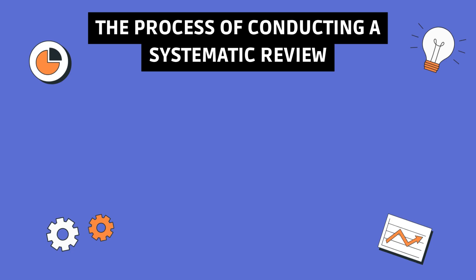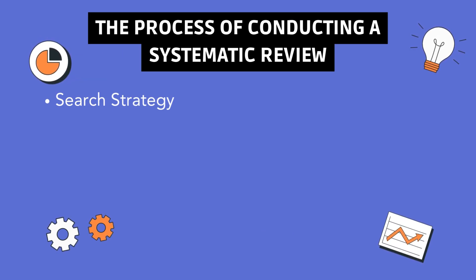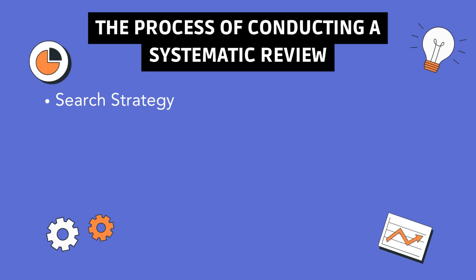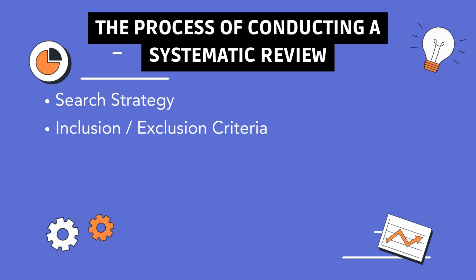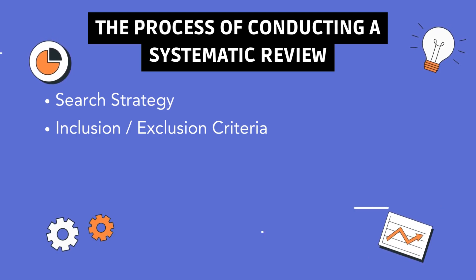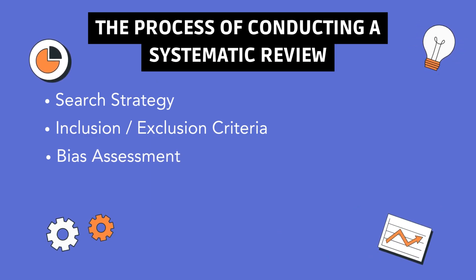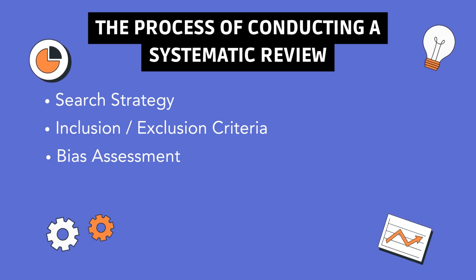Conducting a systematic review involves several key steps. Search strategy: develop a comprehensive search strategy that includes multiple databases and sources of gray literature to ensure that all relevant studies are identified. The search strategy should be transparent and replicable. Inclusion-exclusion criteria: define clear criteria for including or excluding studies based on the research question, study design, population, intervention, and outcomes. This step is crucial for maintaining the review's focus and ensuring that the included studies are relevant. Bias assessment: assess the risk of bias in the included studies using standardized tools, such as the Cochrane Risk of Bias Tool for RCTs or the Newcastle-Ottawa Scale for Observational Studies. This assessment helps to determine the quality and reliability of the evidence.